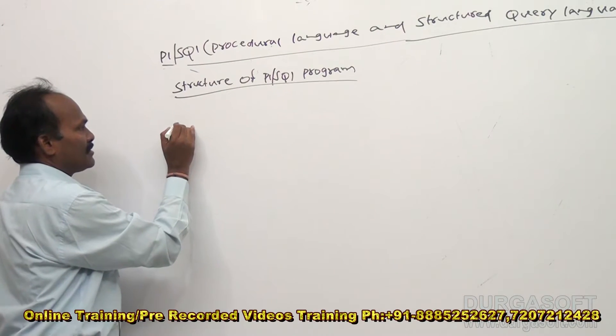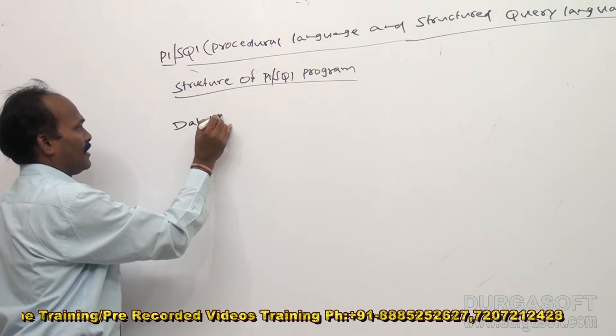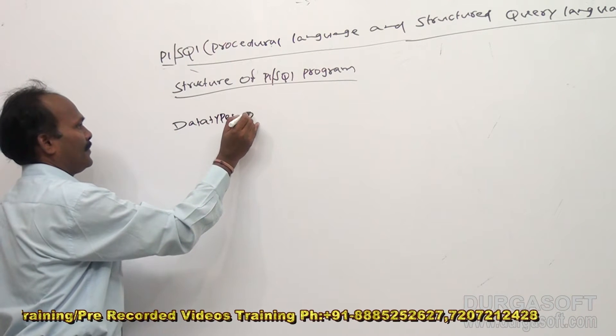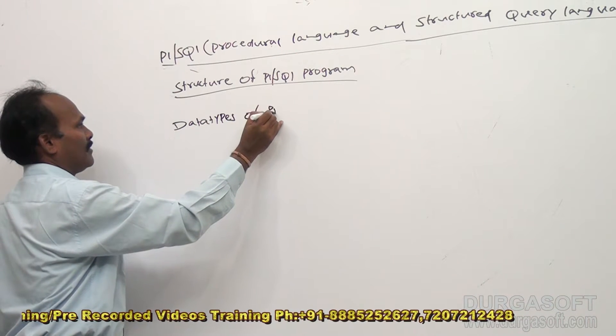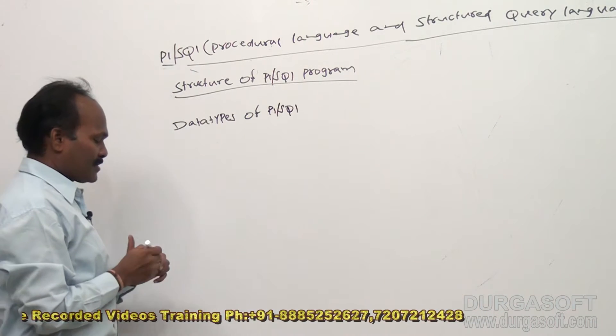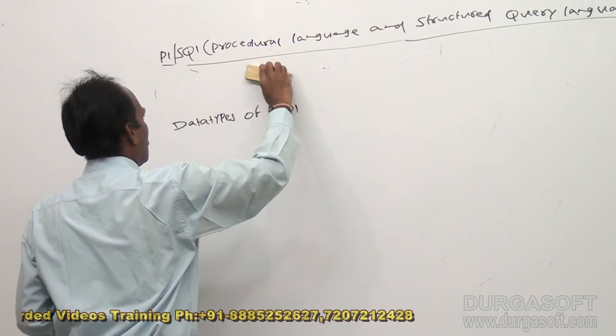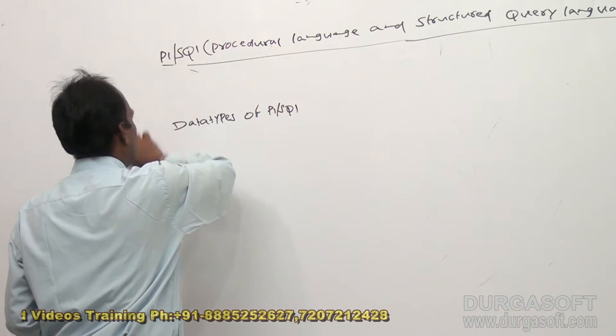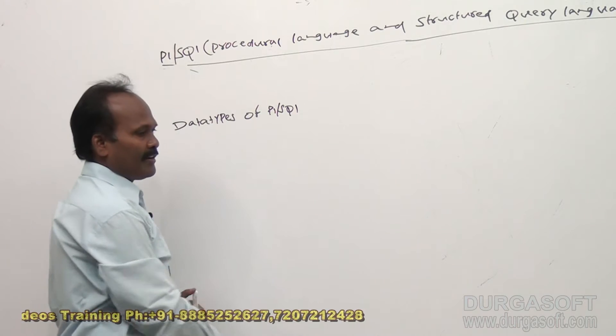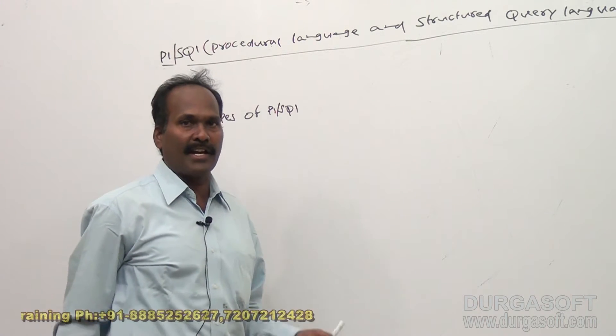So next we are coming to data types, data types of PL/SQL. Under PL/SQL data types, every SQL type is valid. In data types of SQL, what types we have discussed? Like character, varchar, number,